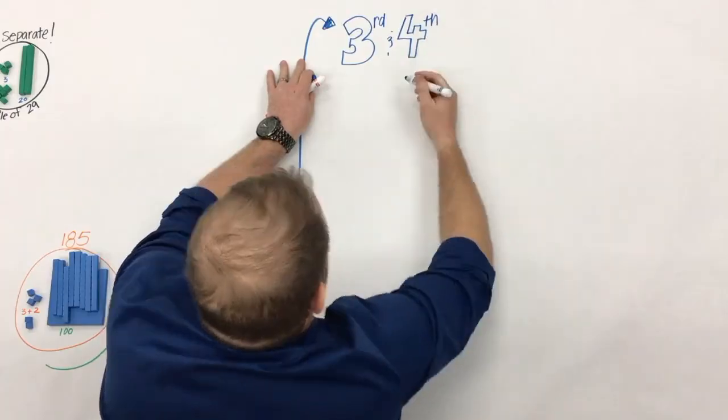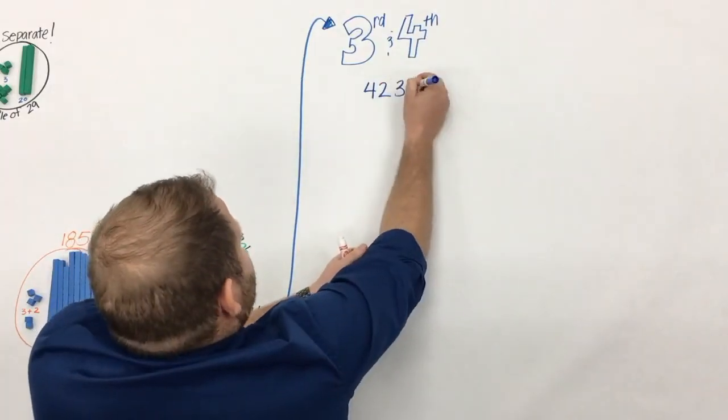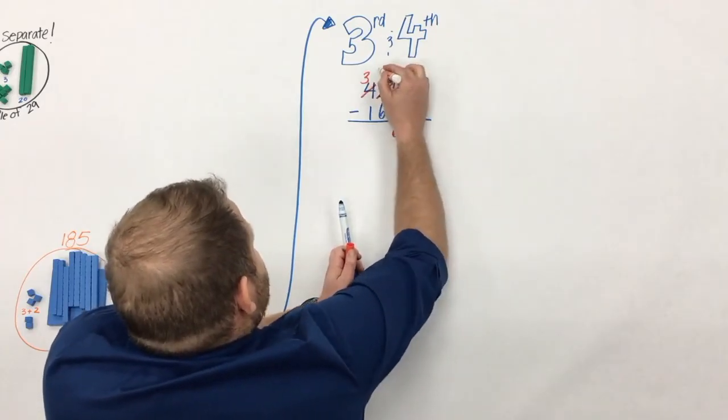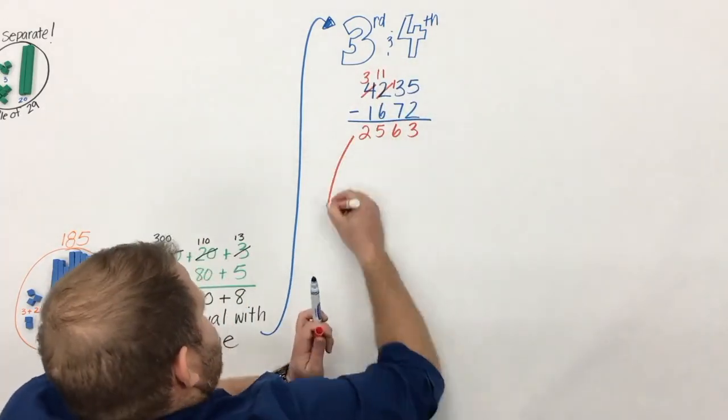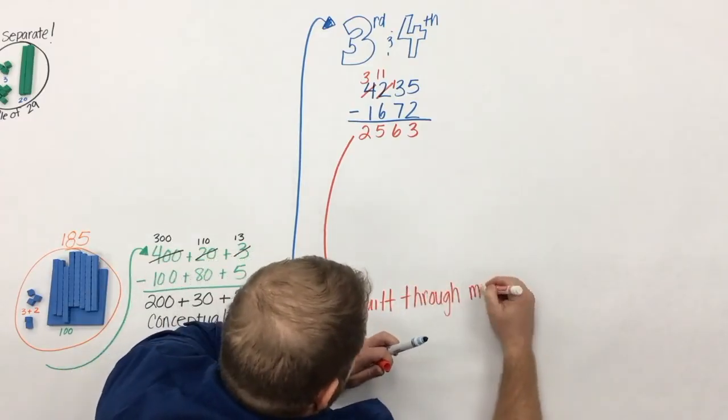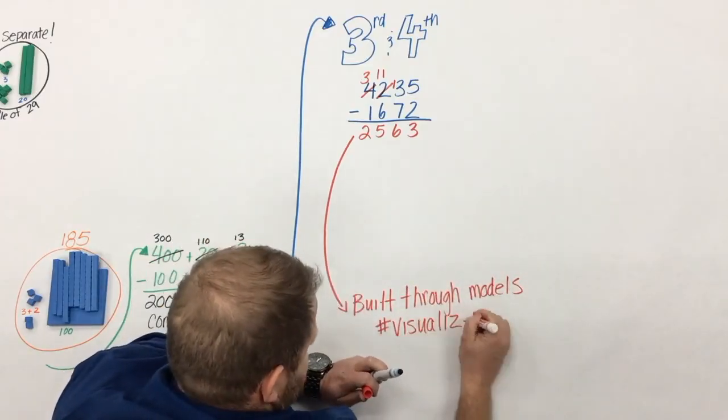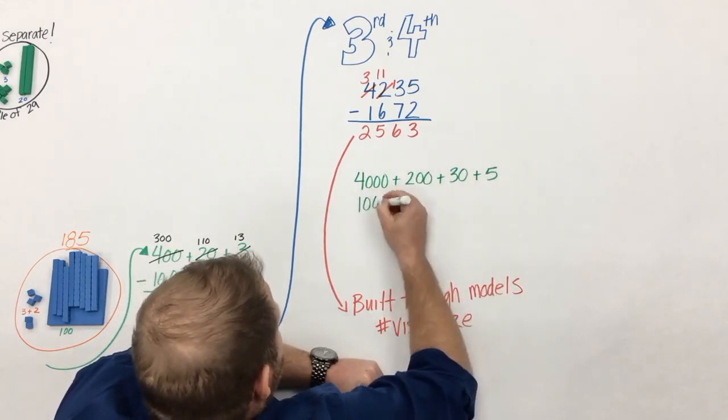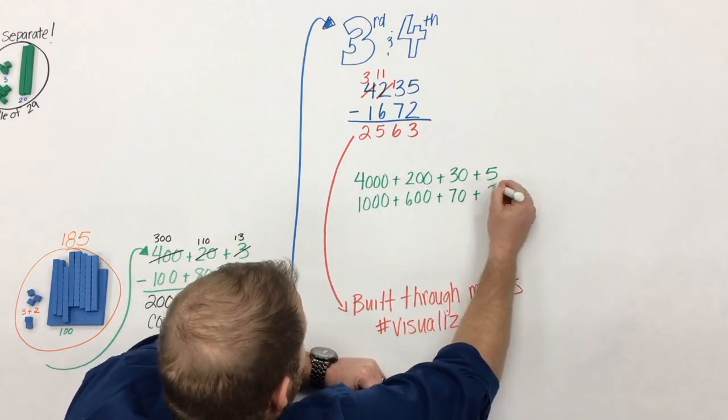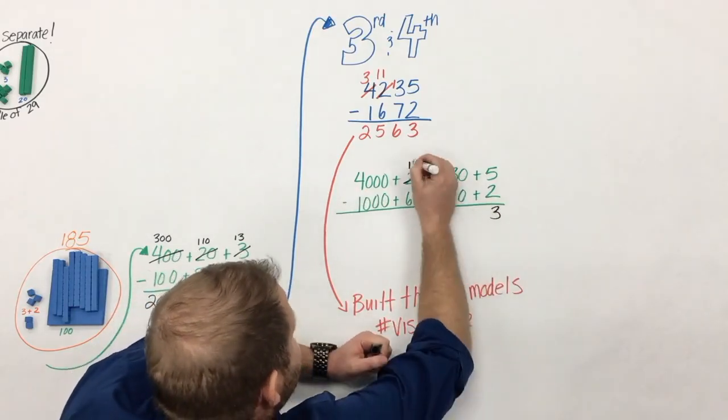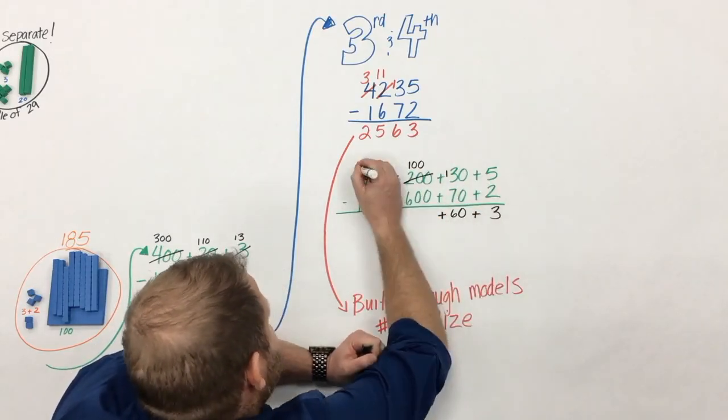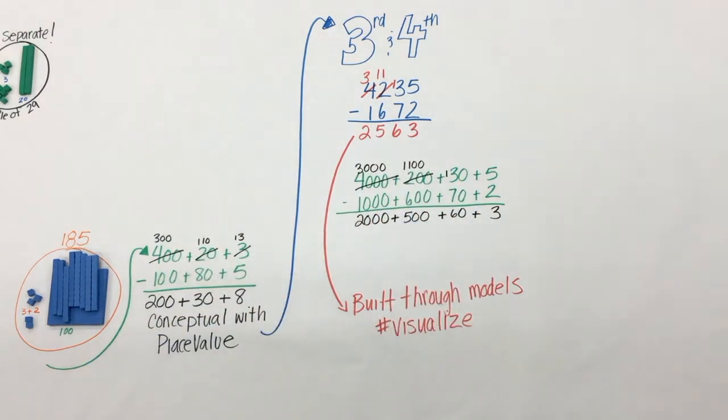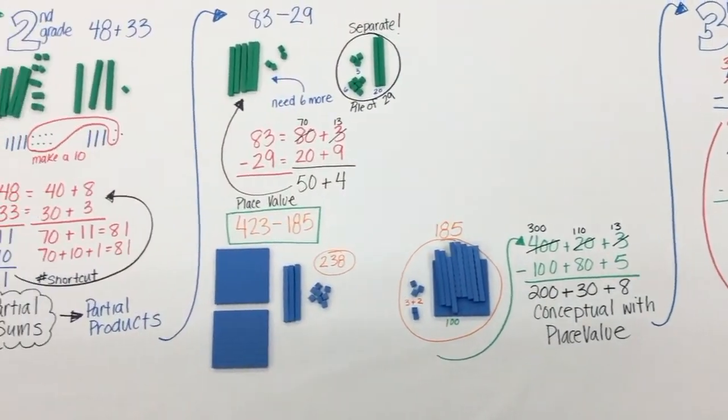So as students dive into third and fourth grade, they have two years to begin to formalize this understanding of subtraction and addition with regrouping and unitizing. But the big thing is that it's built through conceptual understanding. The standard algorithm isn't an expectation until the end of fourth grade, right before students dive into decimals with fifth grade. And you know what? In third and fourth grade, if students need to use expanded form to make sense of what they're doing, let them do it. It's all about the conceptual understanding and allowing students to visualize the math.